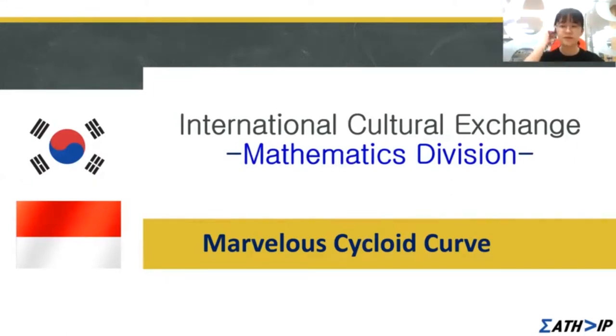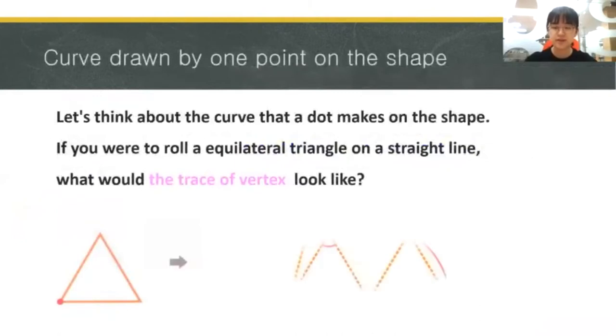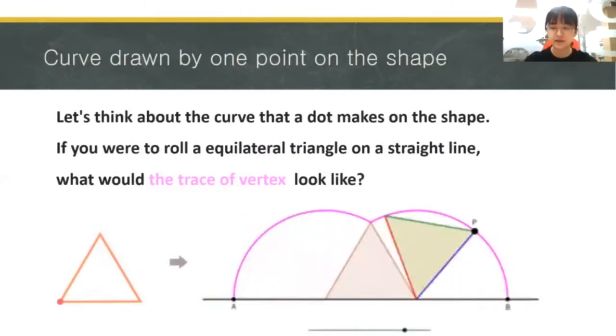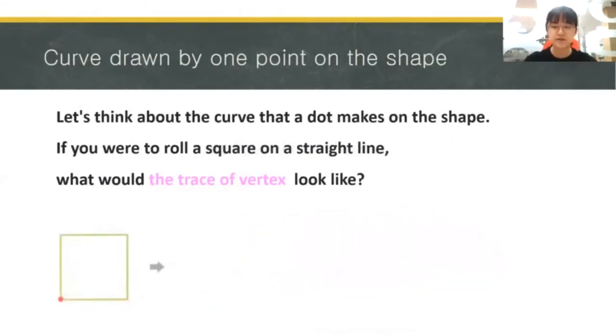To start, let's think about the curve that one point on a moving shape would make. If you were to roll an equilateral triangle on a straight line, what would the trace of the vertex look like? In the case of a triangle, it would look like this. If you were to roll a square, it would look like this.